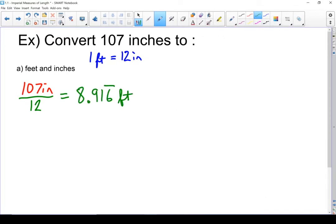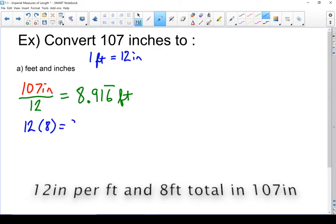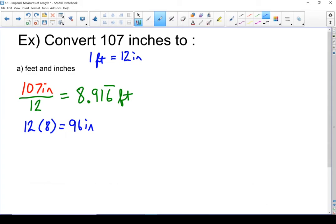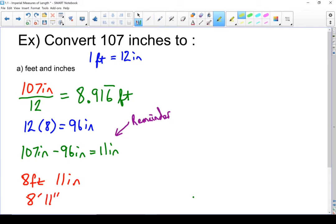So I have 8.916 repeating. When we're converting to feet and inches, we don't want any decimals. So it goes in 8 times. It almost goes in 9 times, but this .916 repeating, we have to convert back into inches. So how I like to do that? 12 times 8 equals 96 inches. So if I take all of my even numbers of 12 out, I've got 107 inches minus 96 inches, which leaves me with 11 inches left over. This 11 right here is the remainder. When we divided 107 by 12, we got 8 with a remainder of 11. So that makes our final answer 8 feet and 11 inches. Or if you write it the short form, 8' 11".